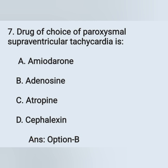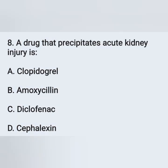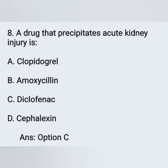Question number 8: a drug that precipitates acute kidney injury is — option A: clopidogrel, option B: amoxicillin, option C: diclofenac, option D: cephalexin. The correct answer is option C, diclofenac — it is an analgesic that can cause kidney injury.